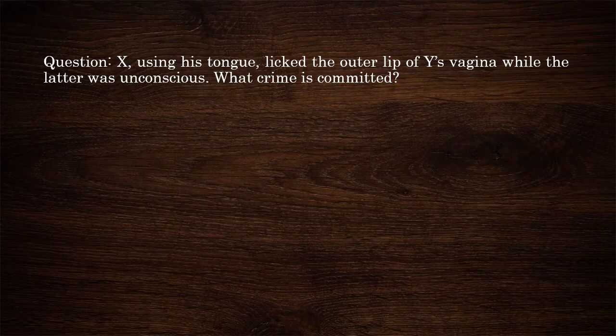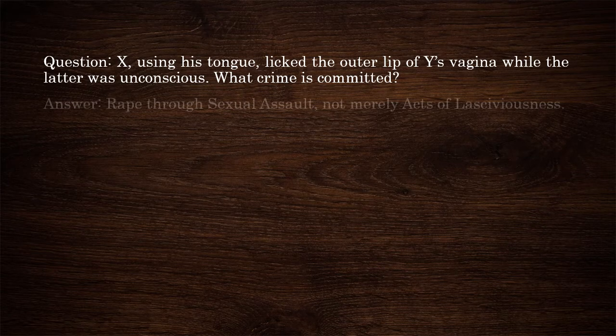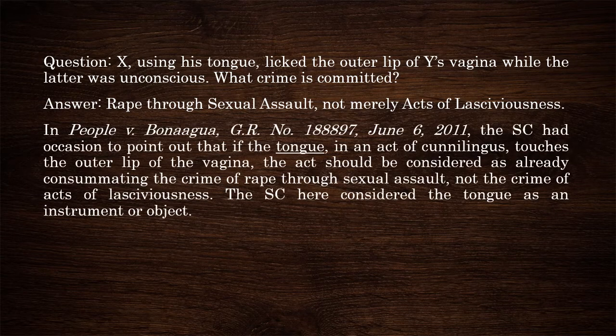Another question: X, using his tongue, licked the outer lip of Y's vagina while the latter was unconscious. What crime is committed? Answer: Rape through sexual assault, not merely acts of lasciviousness. In People v. Bona Agua, the Supreme Court stated that if the tongue, in an act of cunnilingus, touches the outer lip of the vagina, the act should be considered as already consummating the crime of rape through sexual assault. The Supreme Court considered the tongue as an instrument or object.